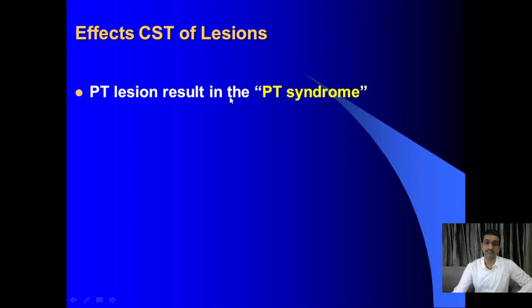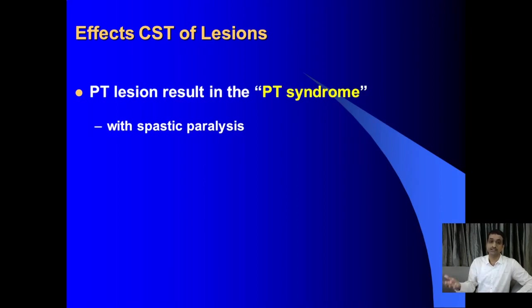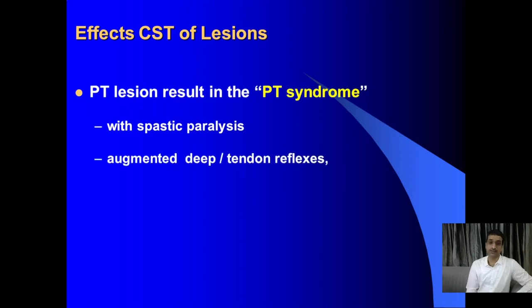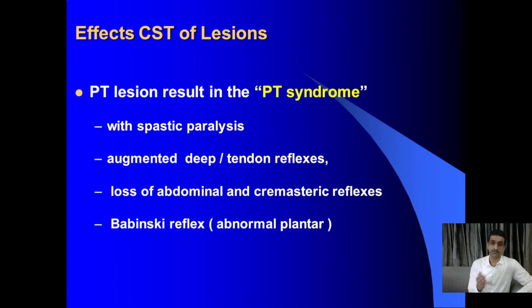Pyramidal tract lesion or CST lesion results in pyramidal tract syndrome or hemiplegia — both terms refer to the same condition — with spastic paralysis. Spastic means tone is increased. The cause can be damage to the non-pyramidal pathways or non-pyramidal part of the motor cortex, because in stroke extensive areas of the brain are involved. The inhibitory fibers that come down and inhibit the brainstem vestibular and reticular nuclei are lost, so those nuclei become unstoppable and continuously activate muscles, increasing tone. There are also augmented deep tendon reflexes such as the biceps reflex or knee jerk, loss of abdominal and cremasteric reflexes, and Babinski's plantar reflex — which is positive in upper motor neuron lesion in adults, as well as in children below 3 years.